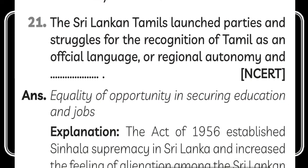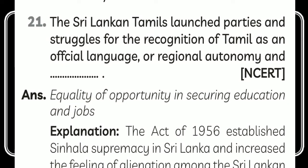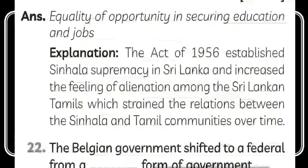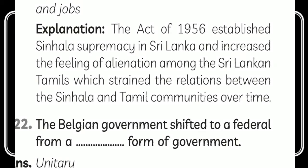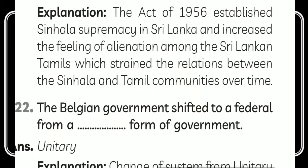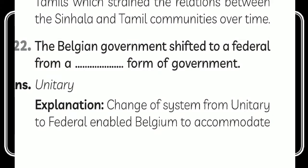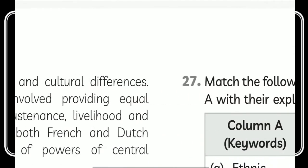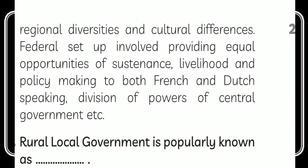Moving on to fill in the blanks. The Sri Lankan Tamils wanted equality of opportunities in security, education, and jobs. The act of 1956 established Sinhala supremacy in Sri Lanka and increased feelings of alienation among Sri Lankan Tamils, straining relations between Sinhala and Tamil communities over time. The Belgium government shifted to a federal form from a unitary form of government, enabling Belgium to accommodate regional diversities and cultural differences, providing equal opportunities to both French and Dutch speaking communities.